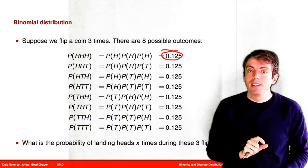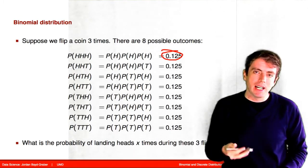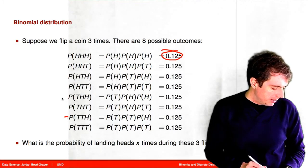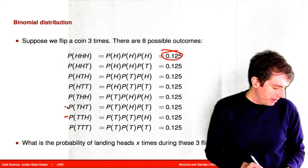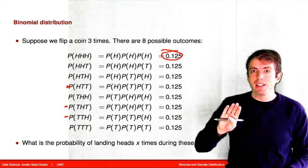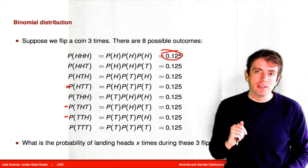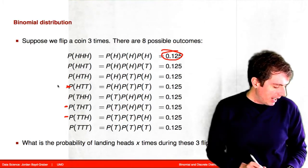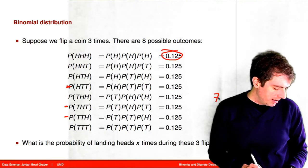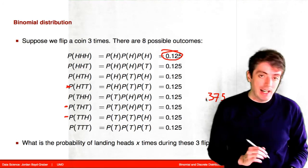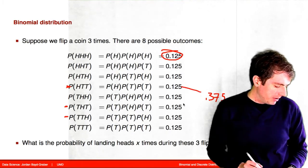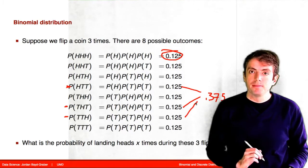But you also have to get tails on the other coin flips, so you need to look at all the ways that could have happened. You can have the head happen on the last coin flip, on the second coin flip, or on the first coin flip. So you need to find all of the ways you could get one success out of three trials — and there are three of them. Then you need to add up all of those together, giving you 0.375 once you add up 0.125 plus 0.125 plus 0.125.